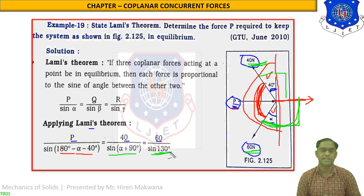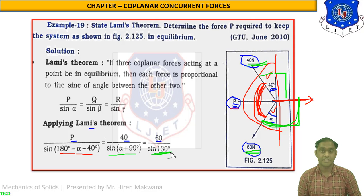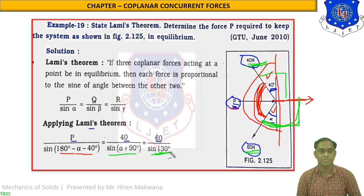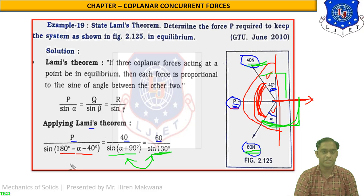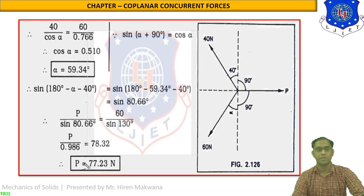We have two unknowns: P and alpha. So first we calculate alpha by comparing the second and third terms, and after getting alpha we substitute it into the first term.